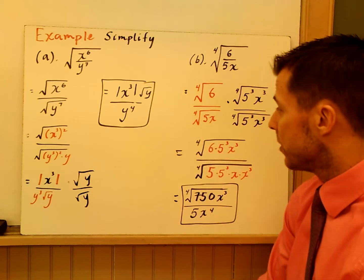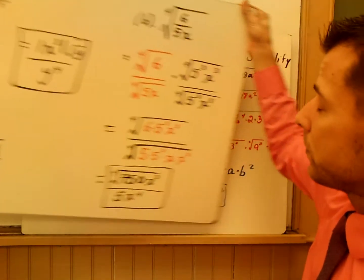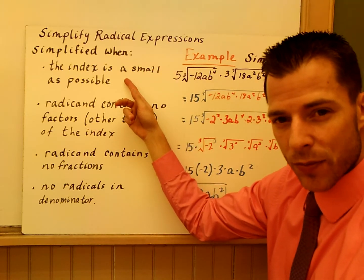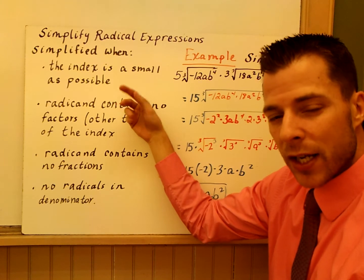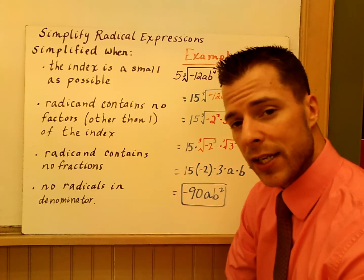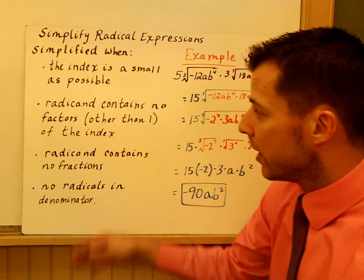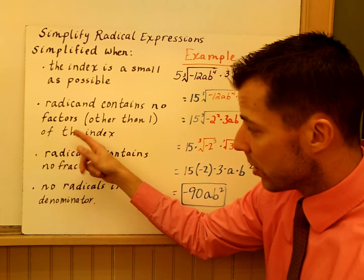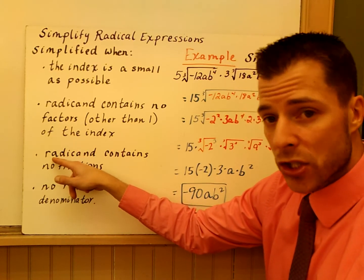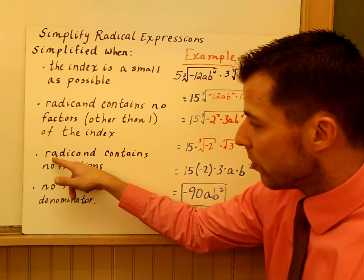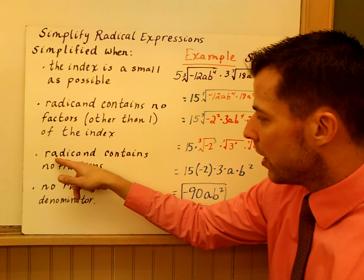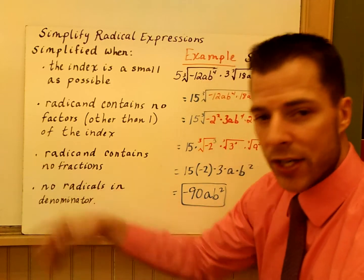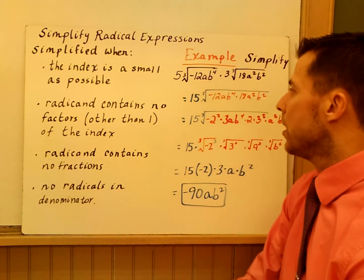Excuse me — these are expressions, not functions. A couple of things about simplifying radical expressions: make sure the index is as small as possible. You know you're simplified when the power in the radicand is smaller than the index. The radicand contains no factors other than one that relate to the index — for example, a cube root with x squared underneath can't simplify further because 2 is not a factor of 3. The radicand contains no fractions, and there are no radicals in the denominator — that last part is rationalizing the denominator.